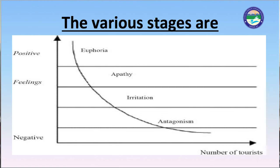The last stage is antagonism. Over-development is leading to negative impacts. The host community blames the tourists and tourism industry for all the negative impacts. Irritation is openly expressed both physically and verbally, and the tourist is seen as the cause of the problem. In both models discussed, we have covered the various effects that tourists cause on the host community and the tourism industry. In the next part, we will discuss Mill Morrison and the Butler Tourism Area Life Cycle. Thank you.